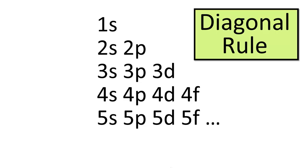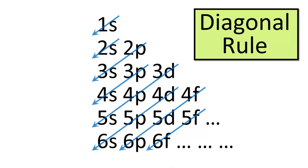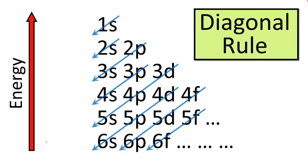Beyond the 4s orbitals, the energy differences between orbital sets become so small that relative energy ordering can vary among elements, resulting in anomalies in ground state electron configurations of transition metals and their ions, which we'll explore in the next video. To remember this energy ordering without memorizing it, use the diagonal rule: list each principal shell from lowest to highest quantum number top to bottom, listing orbital types left to right in order of increasing energy, then draw diagonal lines pointing downward and to the left. Following these diagonals gives the correct energy ordering: 1s, 2s, 2p, 3s, 3p, 4s, 3d, 4p, 5s, 4d, 5p, 6s, and so on.